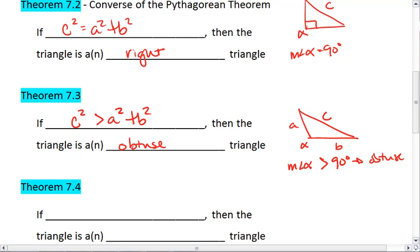The way to remember that is that greater than obtuse. Greater than obtuse because obtuse is greater than 90. Equal to is right because a right angle is equal to 90.